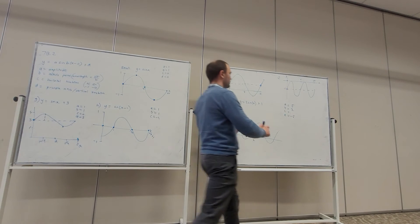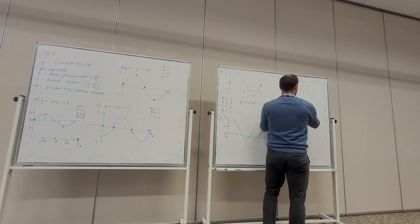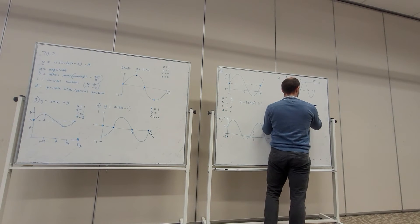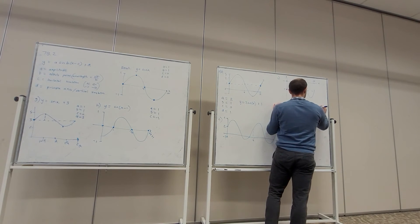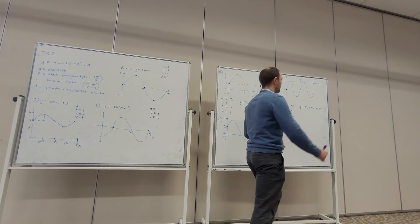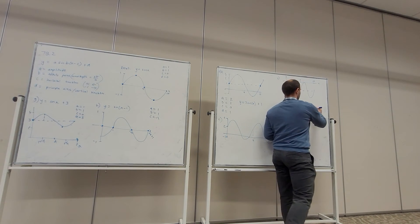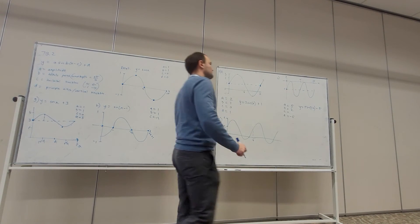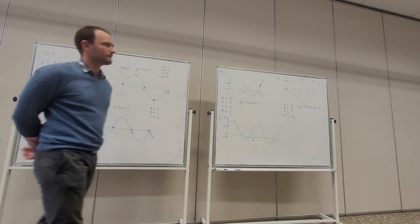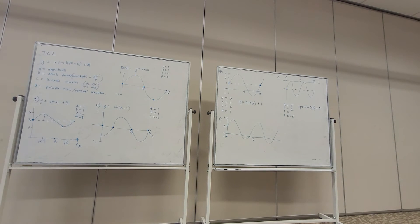Let's state the equation of this function. It's going to be y equals 5 sine 2x, take 5. So a is 5, b is 2, and d is minus 5.